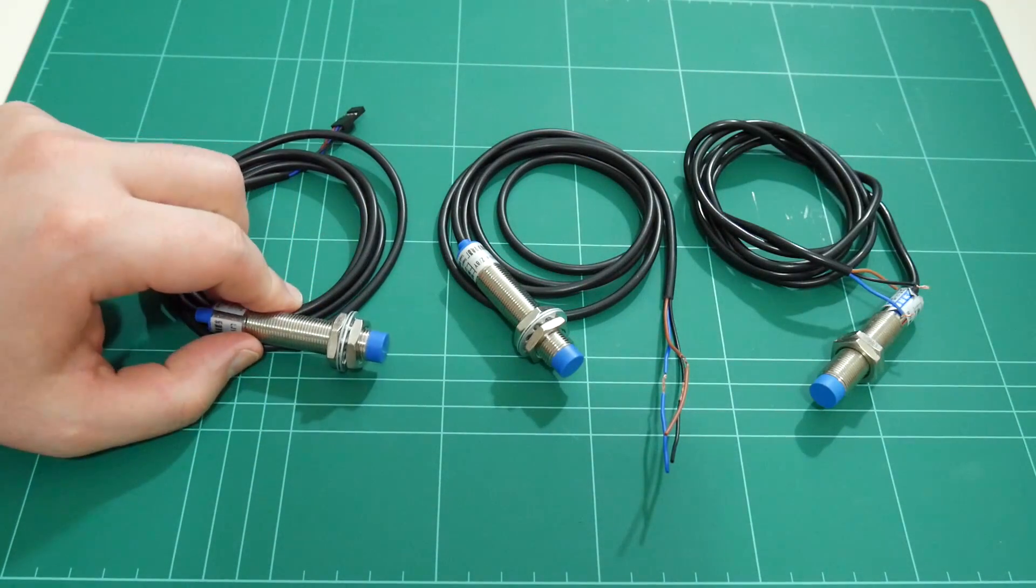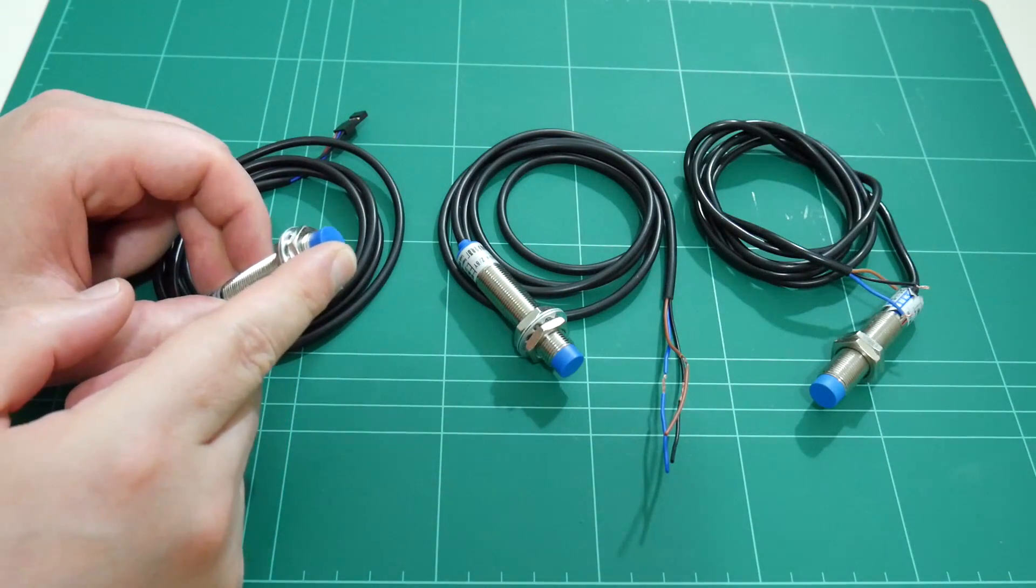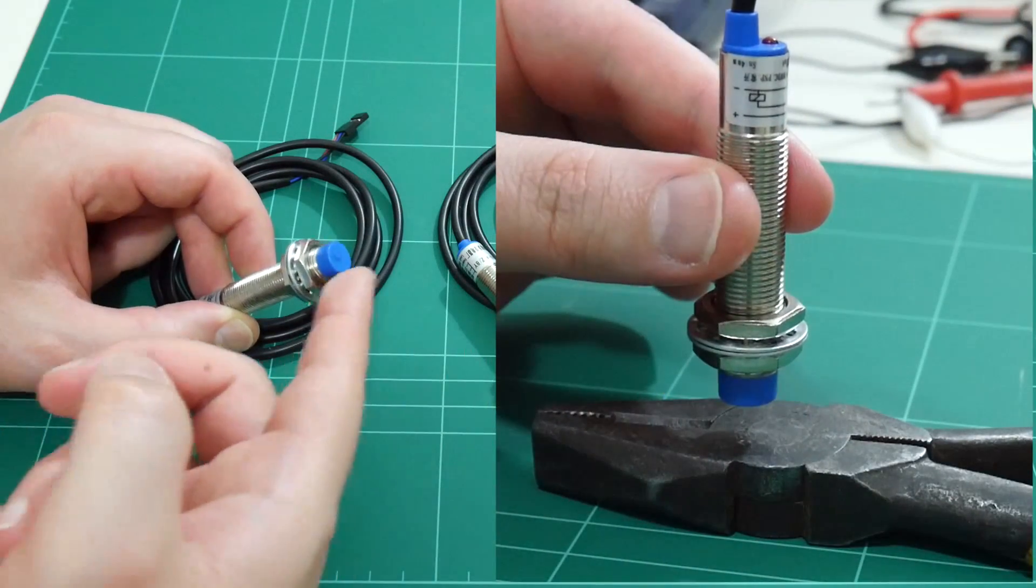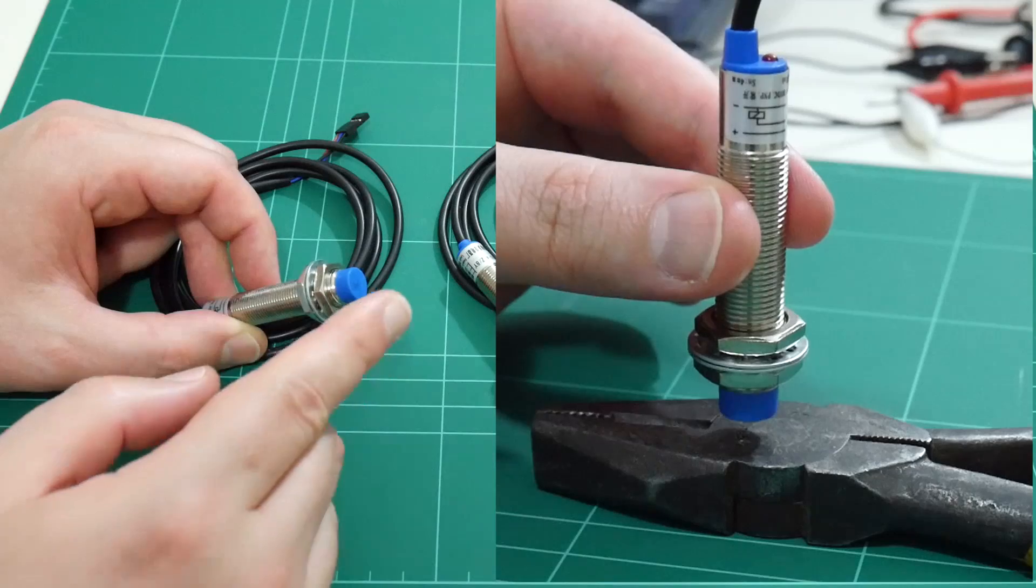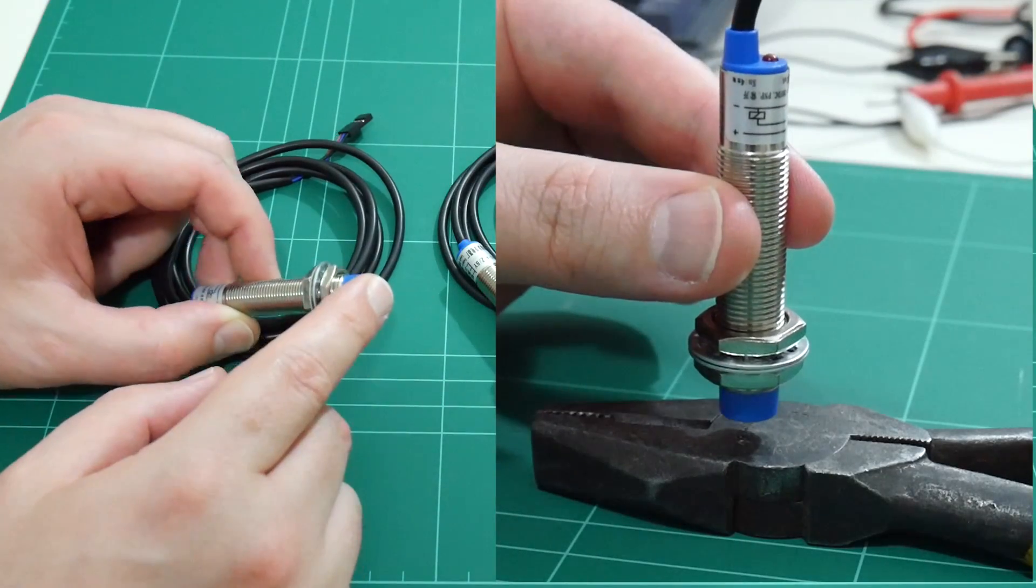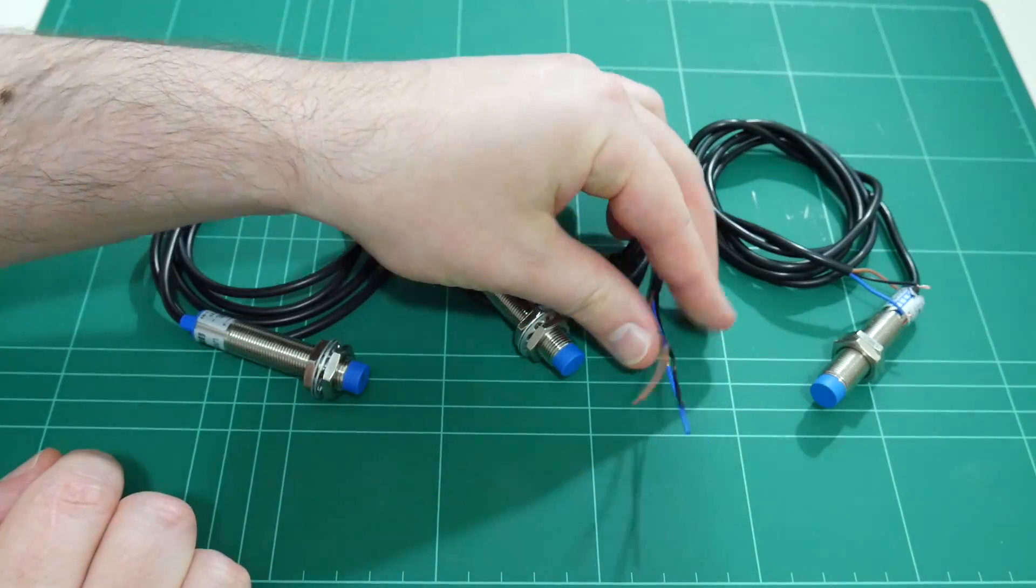The inductive sensor works by sensing a change in the electromagnetic field emitted from its tip. When this field comes close to a metallic object, such as an aluminum print build surface, the amplitude of the field changes. This change is sensed by the internal circuitry which triggers the output sense wire.